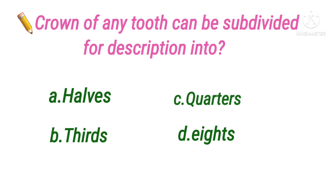The next question: the crown of any tooth can be subdivided for description into — option A halves, B thirds, C quarters, D eighths. The answer is option B, thirds, because for the purpose of description, the crown surface of any tooth is subdivided into thirds.